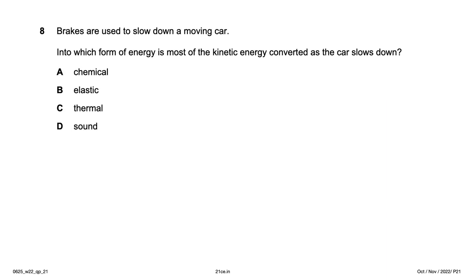Brakes are used to slow down a moving car. Into which form of energy is most of the kinetic energy converted as the car slows down? We have chemical, elastic, thermal, and sound. Sound and thermal energy are both released, but most of the kinetic energy is converted in the brake pad through friction and heat, so thermal — option C — is the right answer.